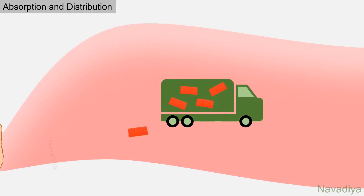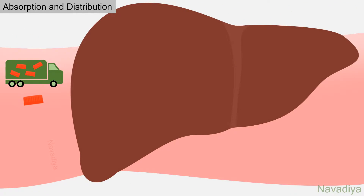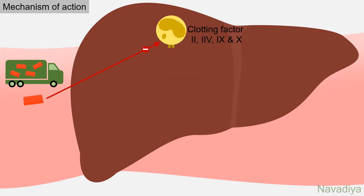Its site of action is mainly the liver, where it inhibits synthesis of vitamin K dependent clotting factors. These factors are factor 2, 7, 9, and 10.